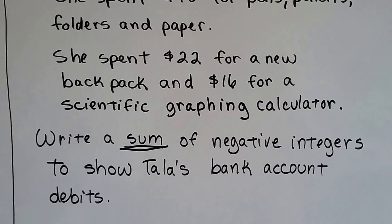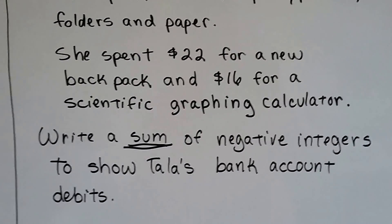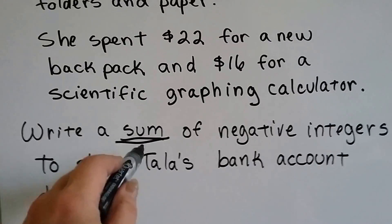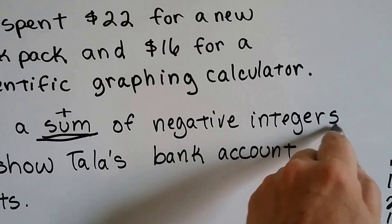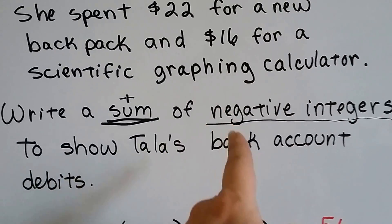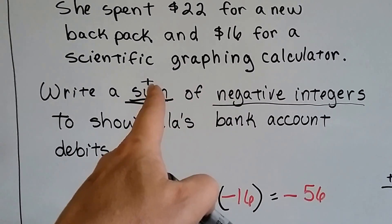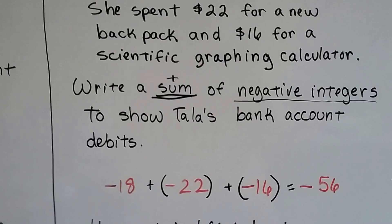Write a sum of negative integers to show Tala's bank account. Well, again, it says write a sum. So that means there's going to be a plus in the equation, isn't there? And it says of negative integers. So it's going to be negative numbers, again, that we're going to be adding together with a plus sign to show her bank account.